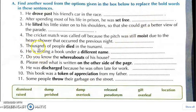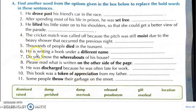Fifth question: thousands of people die in the tsunami. The fifth answer is perished. Then sixth question: he is writing a book under a different name. The answer is pseudonym.